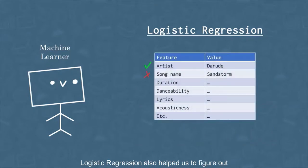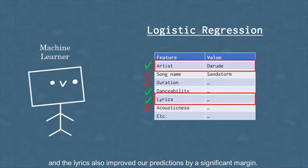Logistic regression also helps us figure out what features are significant contributors to the actual prediction. For example, we realized that artists matter a lot in deciding whether the song would be a hit or not, and the lyrics also improve our prediction by a significant margin.